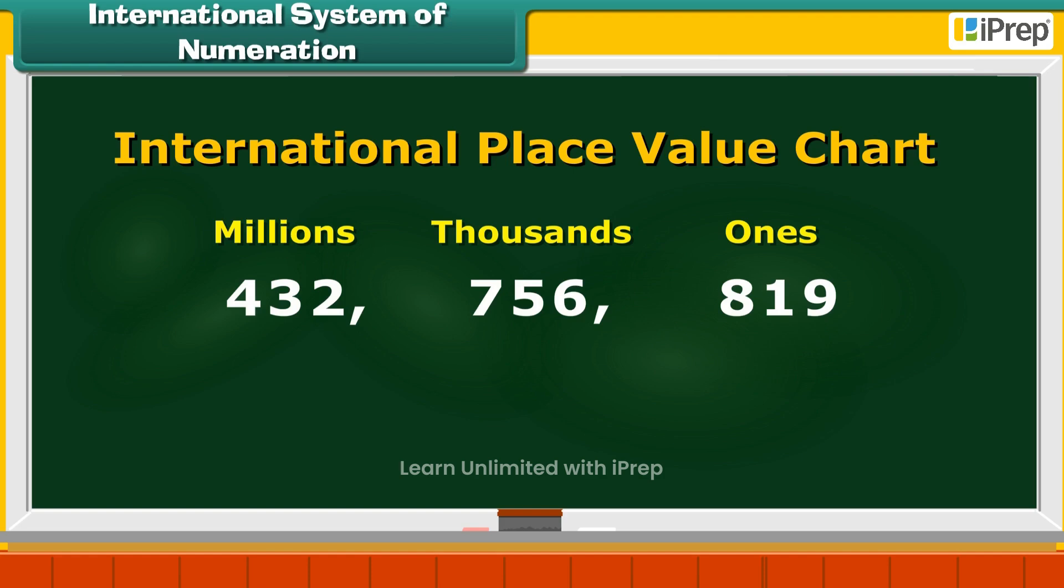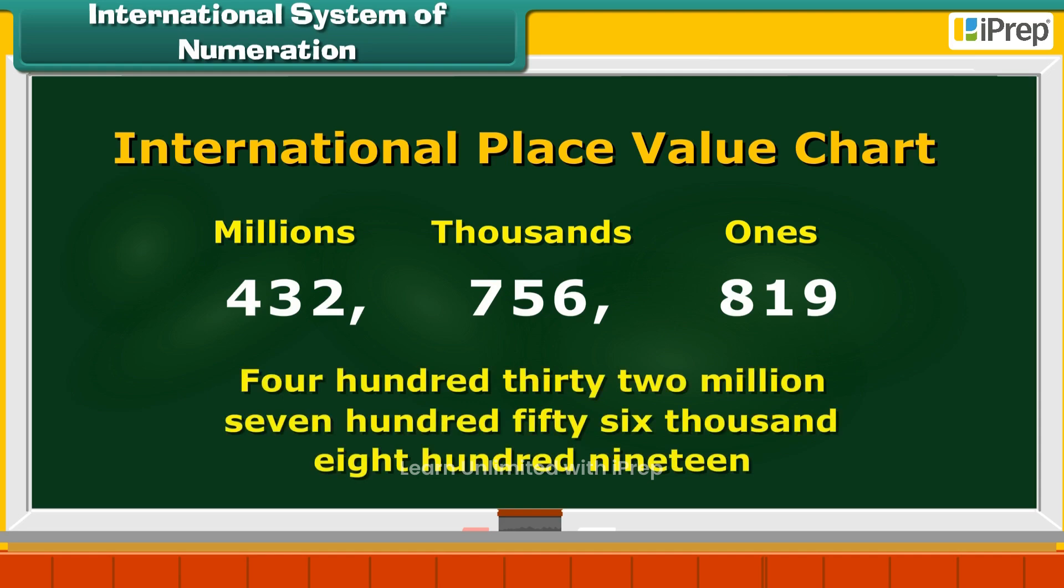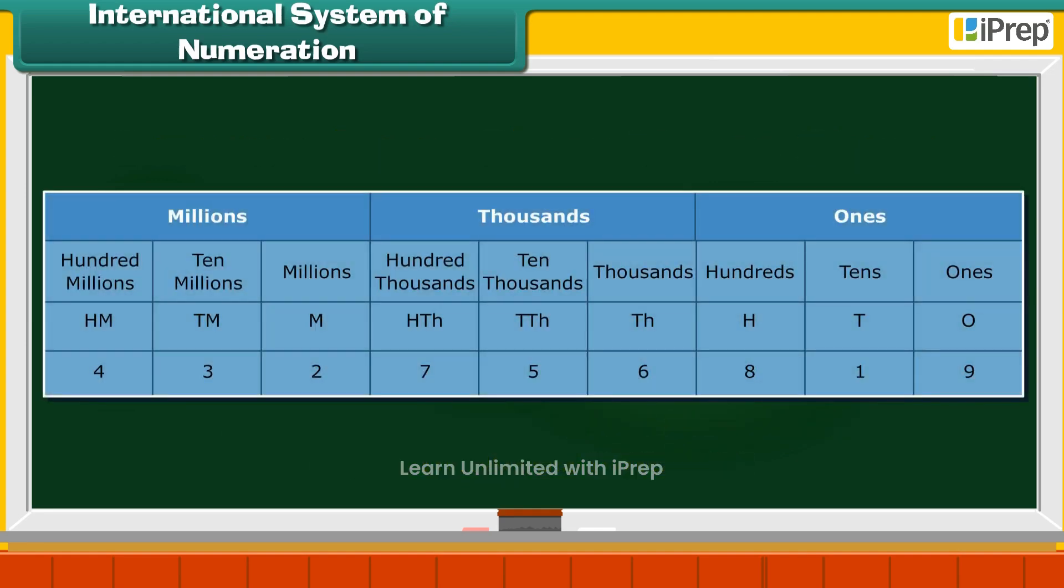Now, let us read the number from left. It is 432,756,819. Let us look at the International Place Value Chart in detail.